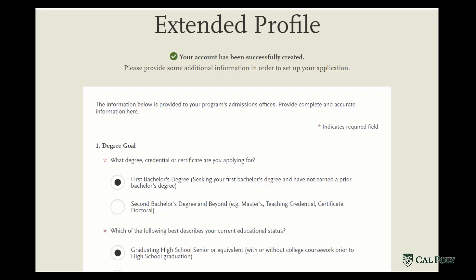Once you've clicked on continue, you will now start your extended profile. When you get to the extended profile area, you will need to indicate a degree goal. Please note that for all undergraduate applicants you will want to choose first bachelor's degree.